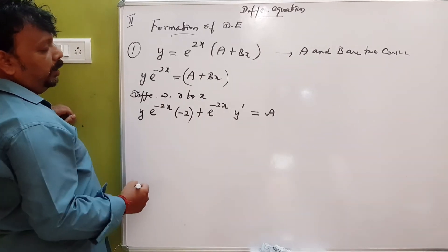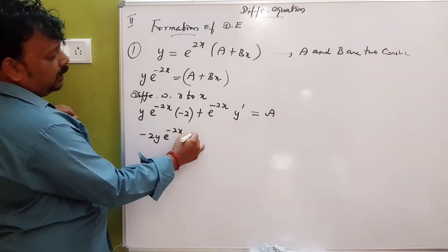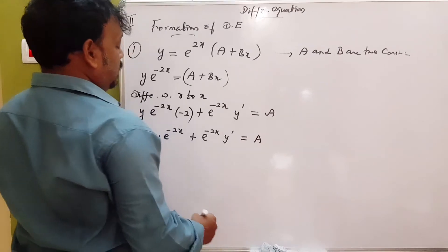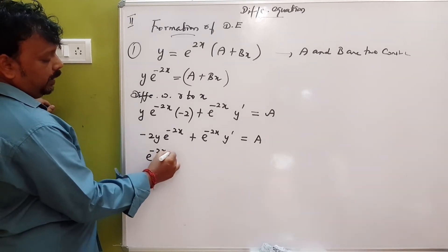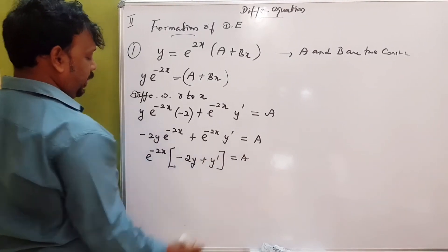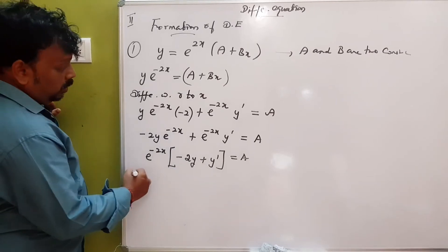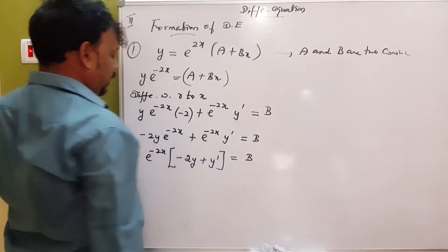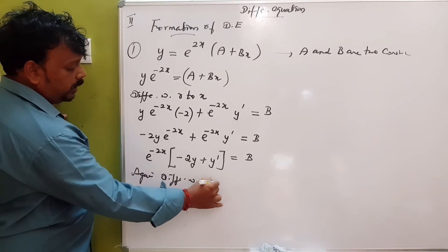Here e power minus 2x, e power minus 2x — all of this gives us e power minus 2x terms. Then e power minus 2x plus e power minus 2x equals A. That means we can write the differentiation with respect to x: e^(-2x) · y dash plus y equals A · e^(-2x). So again, differentiate with respect to x.